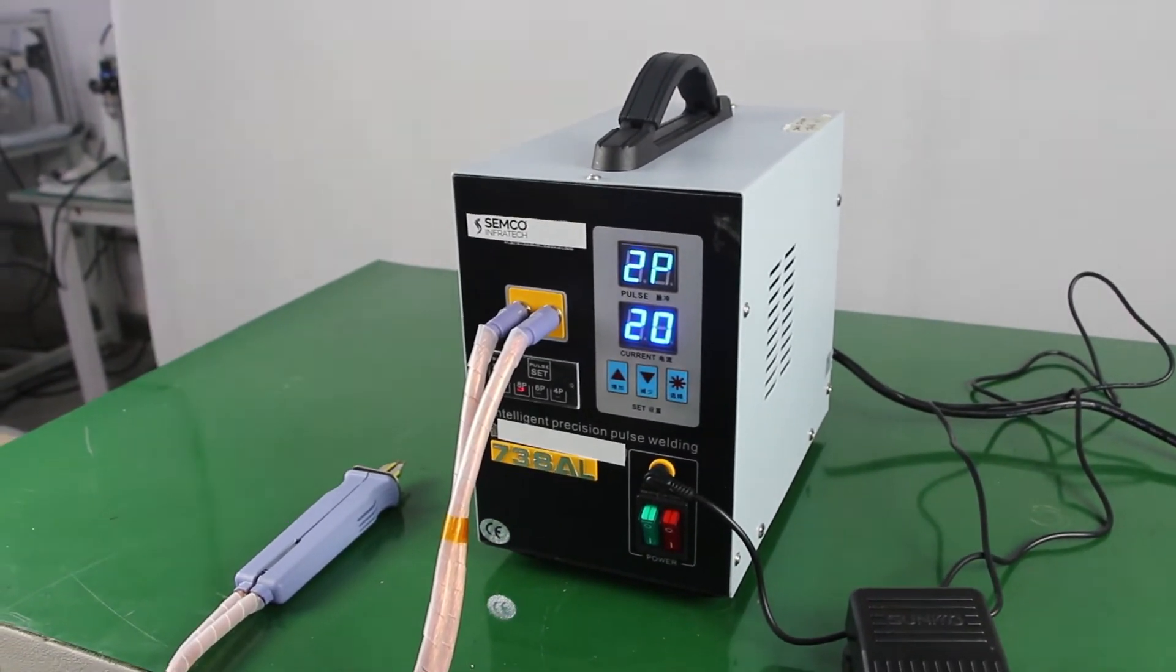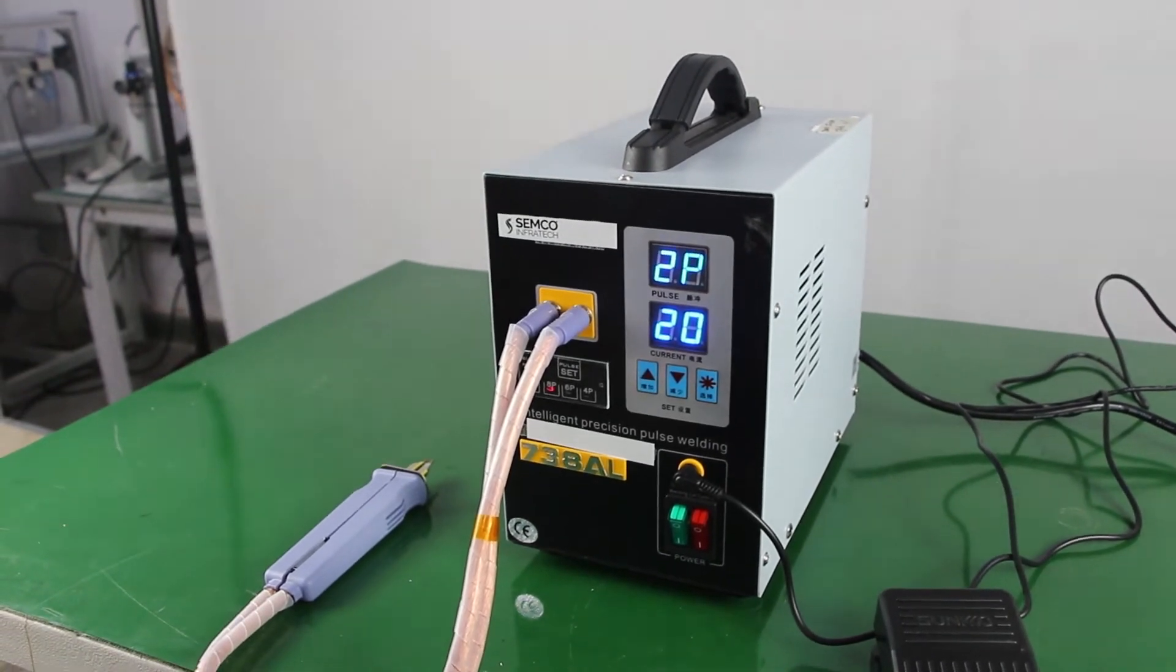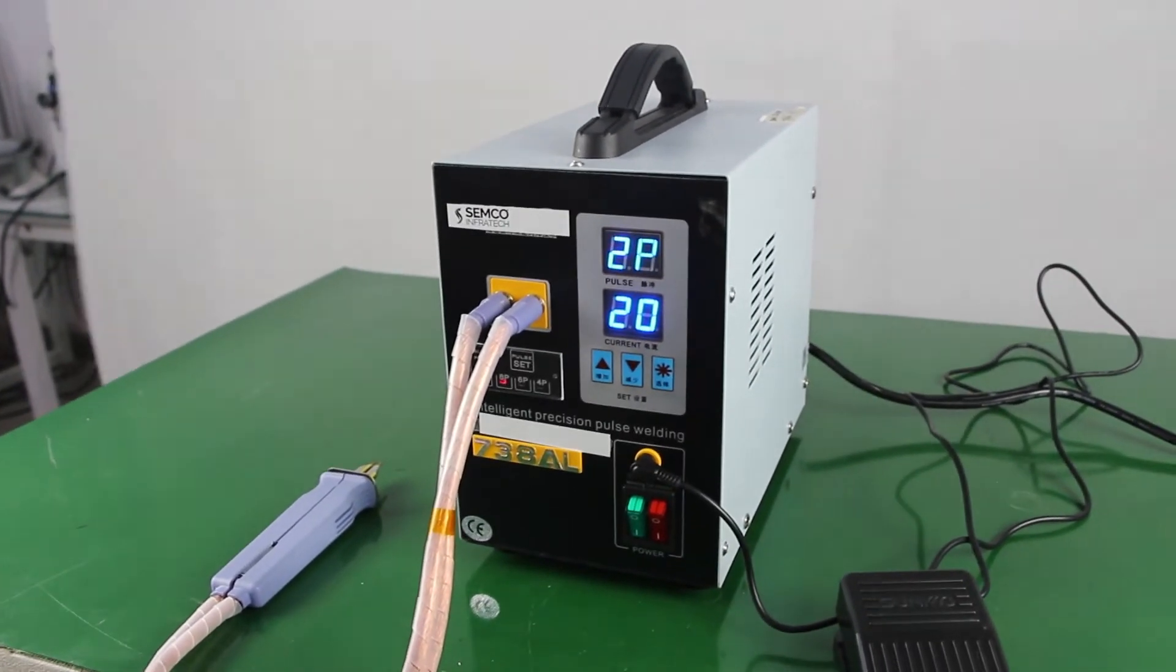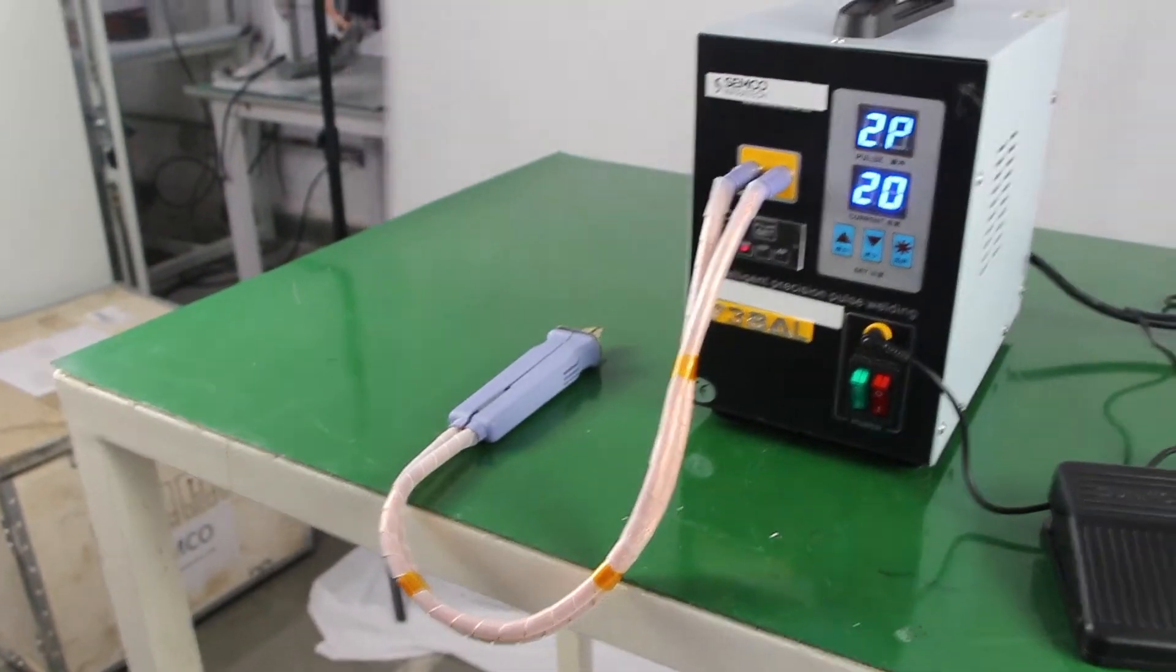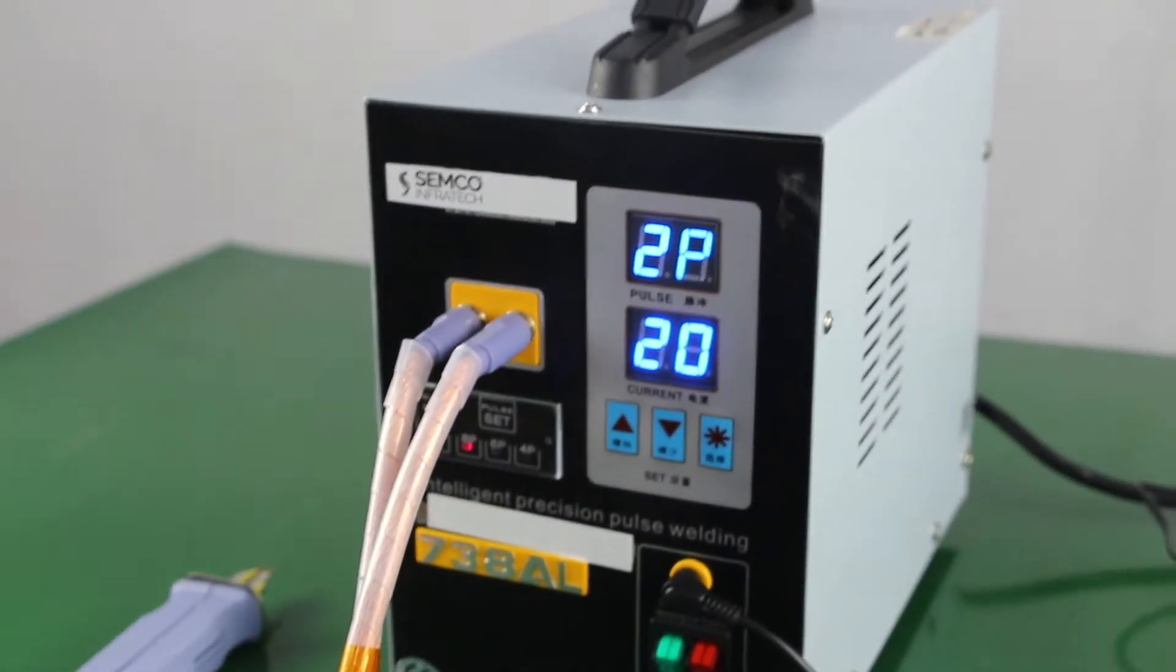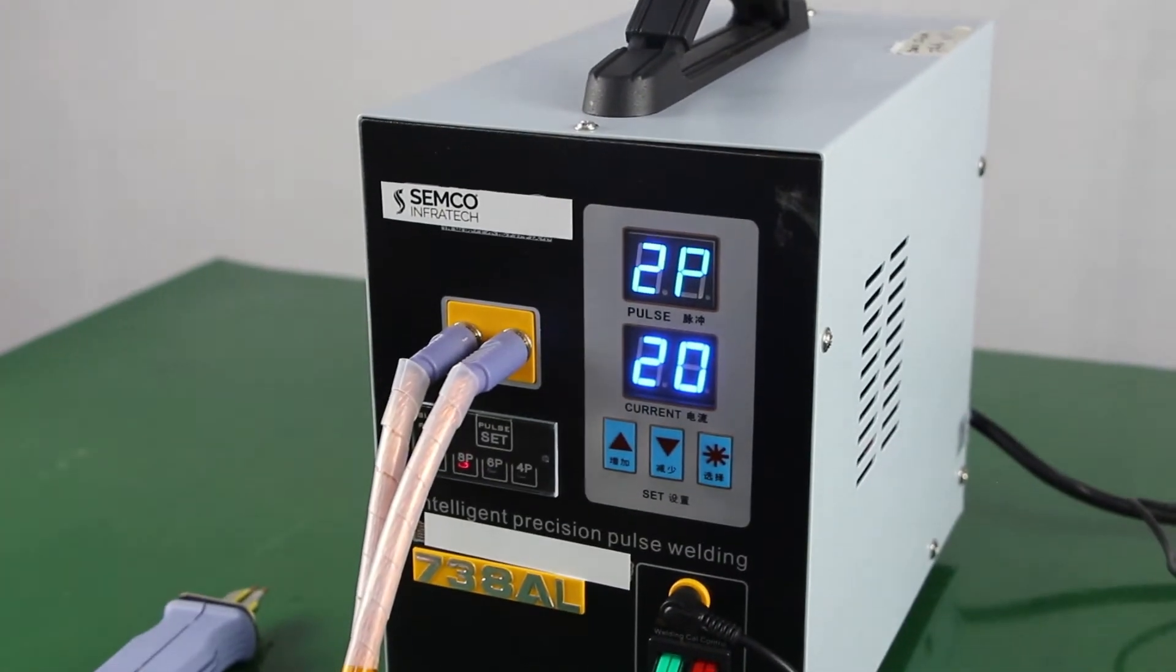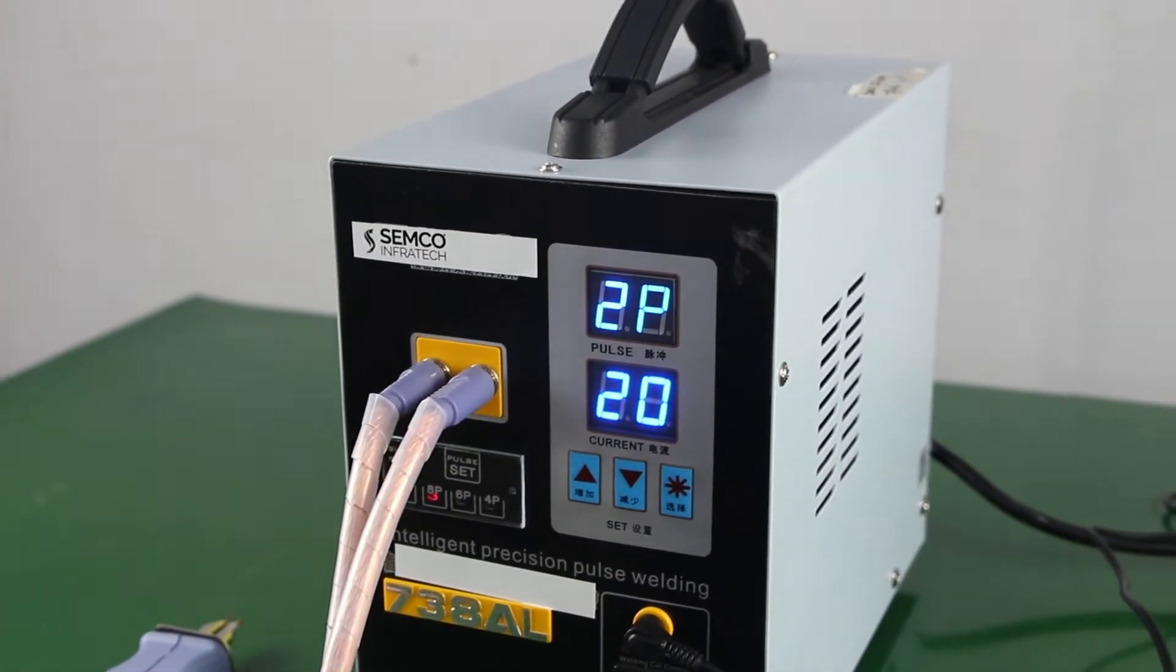These pulses mean we can give extra time for the current flowing through the welding rod at the time of welding. If we set 2 pulses, the time range will be 1 to 10ms. If we set 4 pulses, 2 to 20ms, and for 8 pulses, it will go from 8 to 80ms.